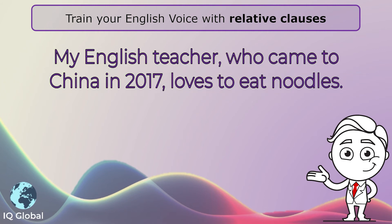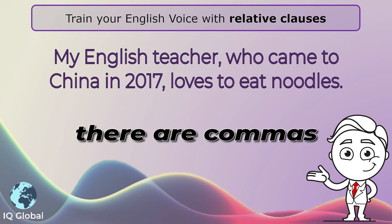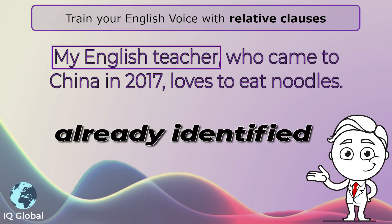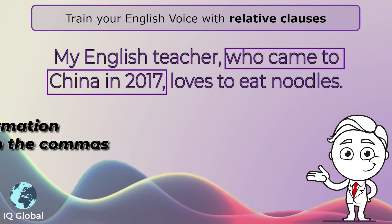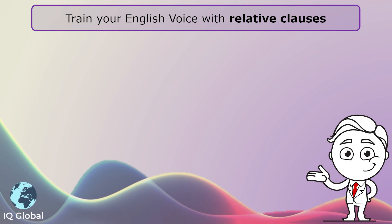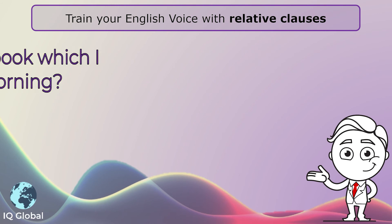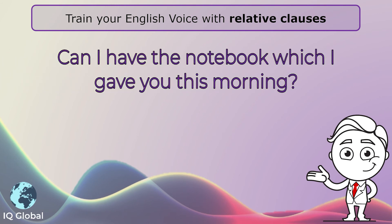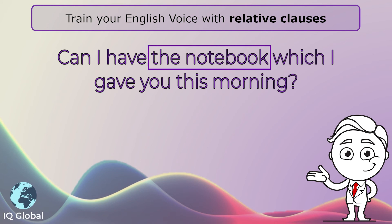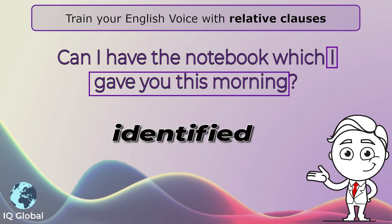My English teacher, who came to China in 2017, loves to eat noodles. We see there are commas in the sentence. My English teacher is already identified, so extra information is given between commas. Our second example: can I have the notebook which I gave you this morning? We see there are no commas in the sentence, and the notebook is identified as the one I gave you this morning.